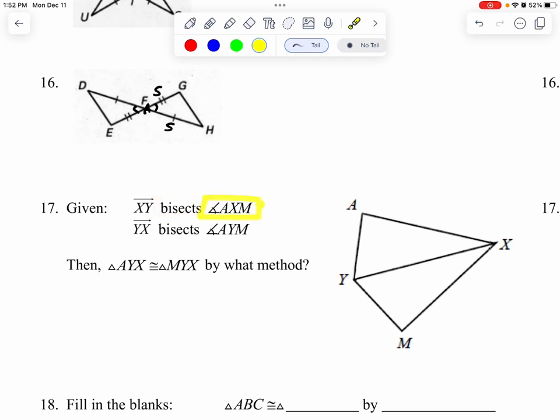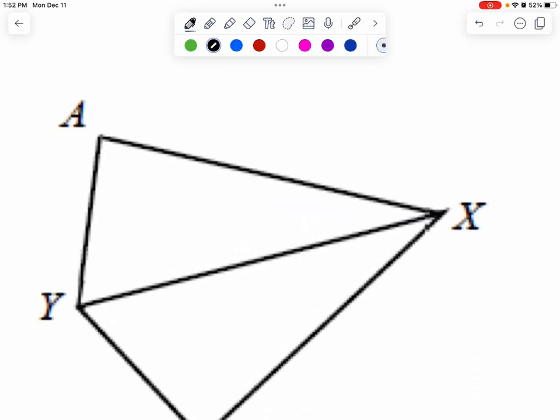Trace it with your finger. A, X, M. That angle is being cut in half, which means I have two equal angles. Here's one, and here's one.